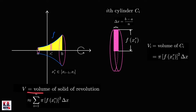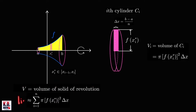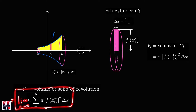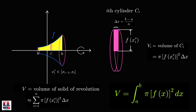To find the exact volume of the solid of revolution, we take the limit of this sum as n approaches infinity, as the number of rectangles increases without bound. The volume equals the limit of this Riemann sum as n approaches infinity. From the definition of the definite integral, this equals the integral from a to b of pi times f of x, quantity squared, dx.